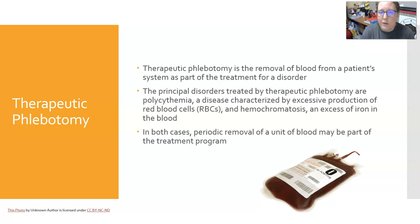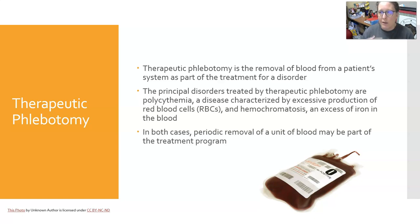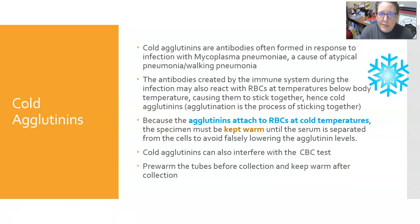Therapeutic phlebotomy, though not commonly performed by most phlebotomists, is possible. It is the removal of blood from a patient's system as part of treatment for a disorder. Conditions treated include polycythemia — too many red blood cells — and hemochromatosis — too much iron — which are more likely in males. In both cases, periodic removal of a unit of blood can be part of the treatment program to alleviate excess iron or red cells, and can be accomplished simply by donating blood regularly if the patient is an eligible donor.